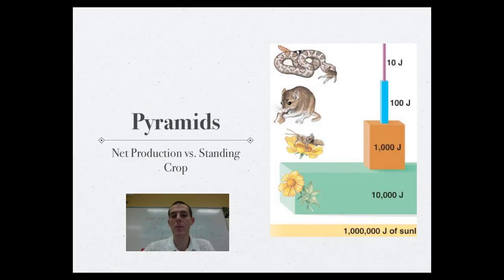These pyramids can be put together in a couple of ways. There's a net production pyramid, which is what you see on the right there, where it actually talks about the energy available in each level. So in this pyramid over here, it's represented using that 10% idea, where at the bottom, you start with a million joules of sunlight.